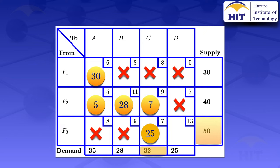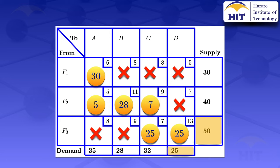Then we move on to the last cell, F3 to D. We look at the supply — there is 50 — and the demand is 25. But in that row, we have already allocated 25, so what we have to allocate is 50 minus 25, which gives us 25. And the maximum possible from the demand side is also 25. So we go ahead and allocate 25 units there.